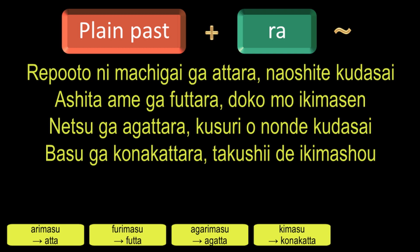The verb Wakarimasu means to understand, and the negative is Wakarimasen. Its past tense is Wakarimasen deshita and the plain past form is Wakaranakatta. By adding Ra, we will get the condition Wakaranakattara, which means if something is not understood.